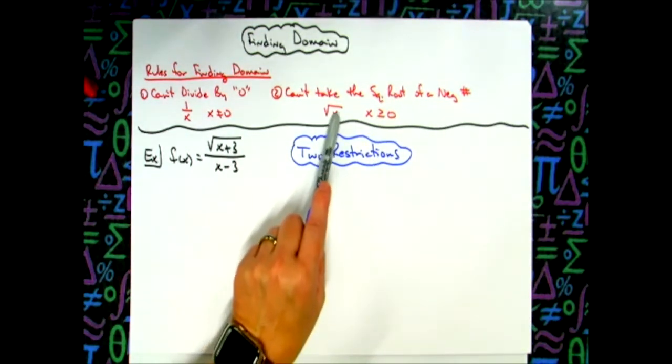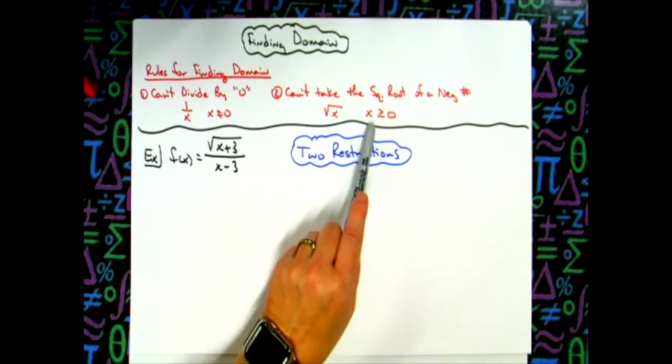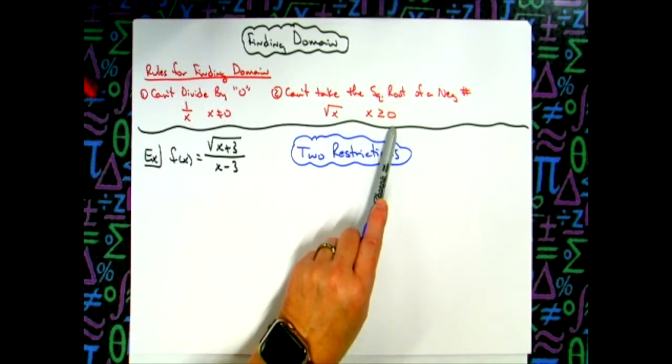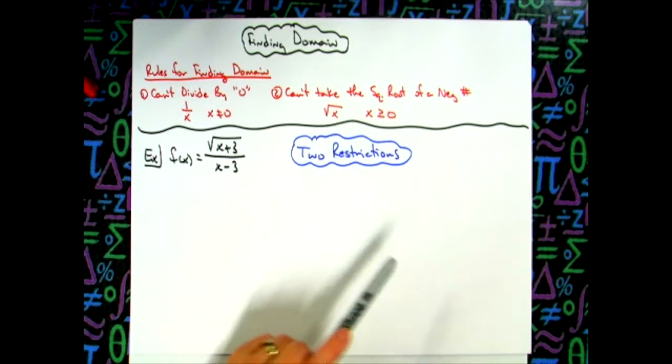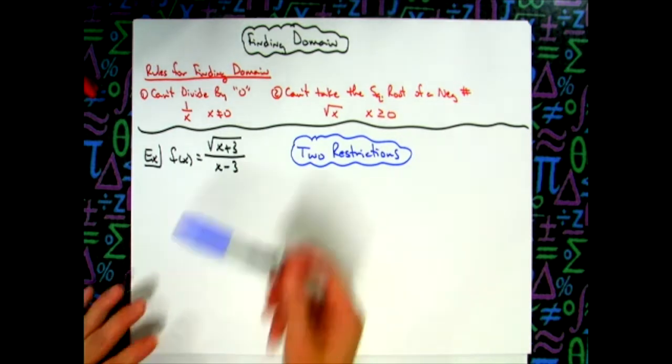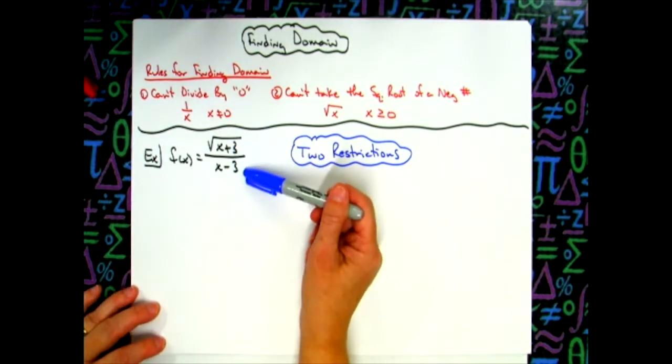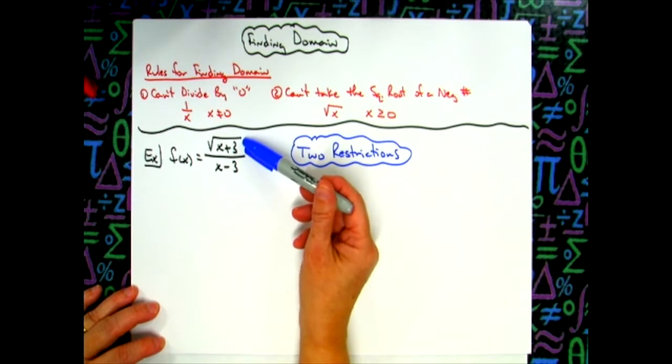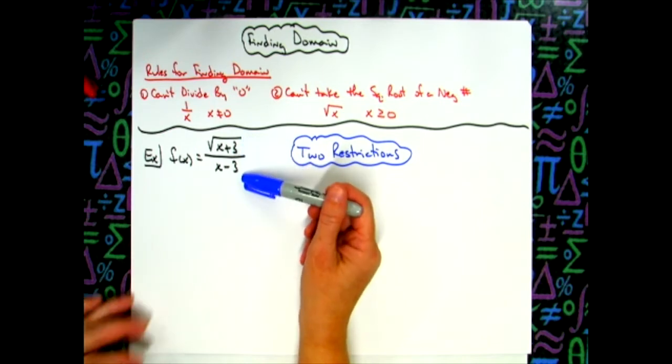So whatever's underneath the radical has to be greater than or equal to zero. Equal to zero because I can take square root of zero and get zero. So I'm not taking the square root of a negative number there. So basically with this we're going to have to deal with two different restrictions. We're going to have to deal with the restriction in the numerator and then the restriction in the denominator.